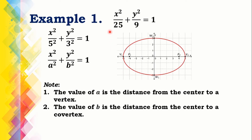Example number 1: x squared over 25 plus y squared over 9 equals 1. This is an ellipse with center at (0, 0). The equation can be transformed with denominators 5 squared and 3 squared. Since 25 is greater than 9, and 25 is the denominator of x squared, we conclude that its major axis is horizontal, and the standard form used is x squared over A squared plus y squared over B squared equals 1.